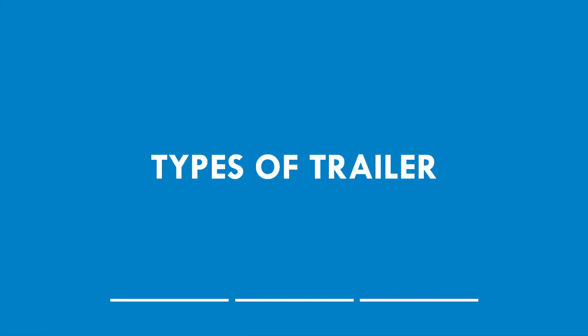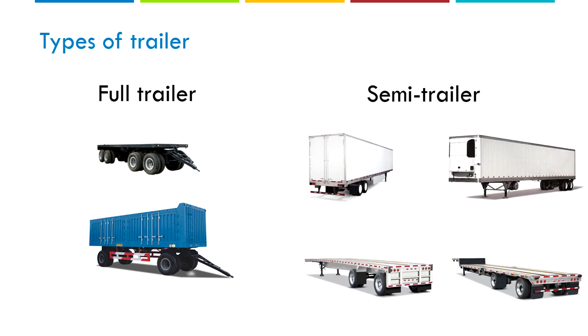Let's begin with a quick overview of the most common trailers in the market and the main differences between them. We're going to find two big main categories depending on how they attach to the truck. On the one hand, we have what we know as a full trailer. These ones will have all the weight supported by their own axles, back and front, and they are connected to the truck by a hook, so they just need to be pulled.